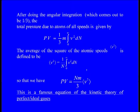The average of the square of atomic speed, which is known as the root mean square speed, is defined as V² average = (1/n) ∫₀^∞ V² dn. This is known as the root mean square velocity, defined as the average of the square of the velocity.